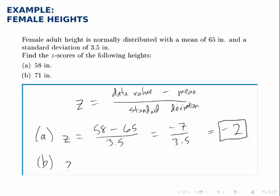For the second point, we do the same thing, taking 71 minus 65 and dividing by 3.5. 71 minus 65 is 6, and that divided by 3.5 is 1.71.